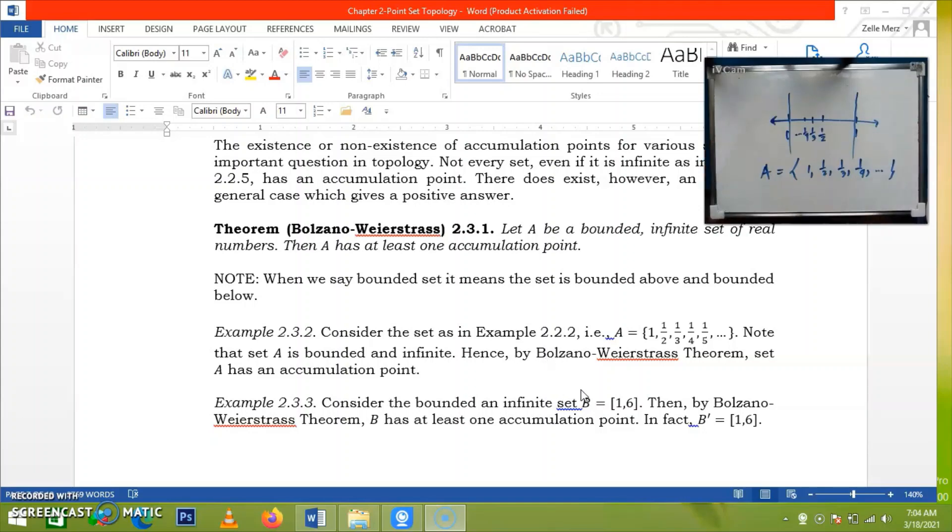Now, let's try to consider another example. We have here the bounded and infinite set B. So by using the Bolzano-Wierstrass theorem, we can say that B has at least one accumulation point. And in fact, using the concept of accumulation point, we can say that the derived set of B is the same as or equal to the set B.